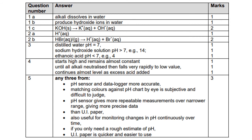Question three: how could you use universal indicator to distinguish between distilled water, sodium hydroxide solution, and ethanoic acid? You'd distinguish them by their pH. Water is neutral at pH 7, sodium hydroxide has a pH greater than 7 because it's alkaline, and ethanoic acid has a pH less than 7. Sodium hydroxide is a very strong alkaline solution, but ethanoic acid is not that strong. Next lesson, we'll be looking at strong and weak acids.